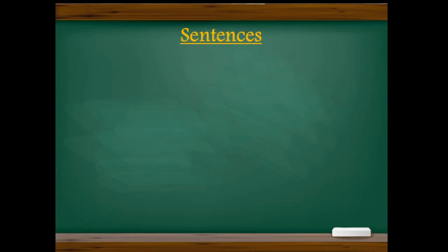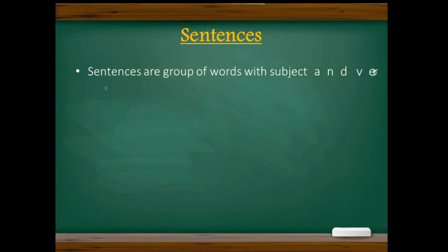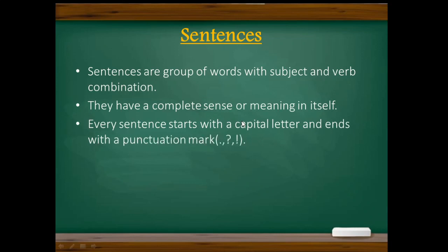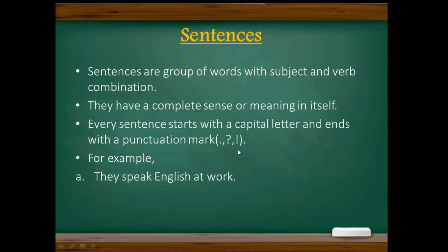Next we have sentences. Sentences are again a group of words, but they are with subject and verb combination. They have a complete sense or meaning in themselves. Every sentence starts with a capital letter and ends with a punctuation mark like a full stop, question mark, or exclamation mark. For example, 'they speak English at work.' So who is speaking? They — so 'they' is the subject. 'Speak' is an action word, so it is a verb. Subject and verb combination is there, so the first condition is fulfilled. 'They speak English at work' has a complete meaning, starts with a capital letter and ends with a full stop. So this group of words is nothing but a sentence.